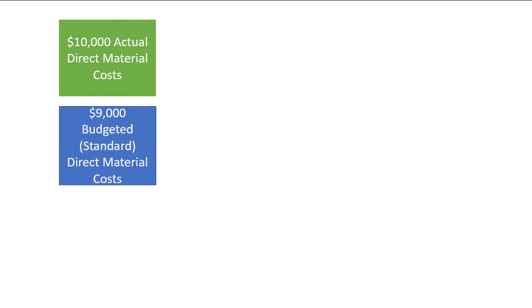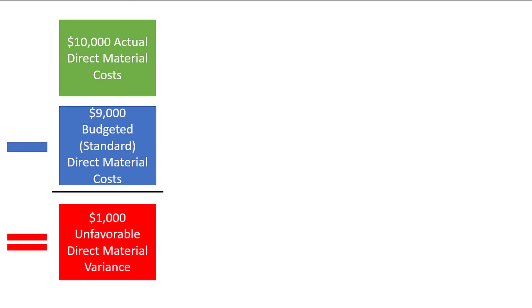In this video, we will be introducing standard costs and exploring how to compute material and labor cost variances. Standard costs are predetermined budgeted costs that a company can use to compare actual costs to. For example, let's say that a company spent $10,000 on direct materials this month, but the budgeted standard amount is only $9,000. This is a $1,000 unfavorable direct material cost variance, because the actual cost of materials exceeds the budget.